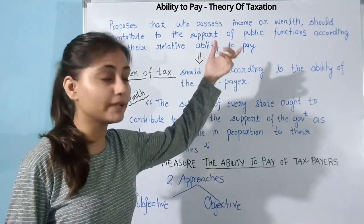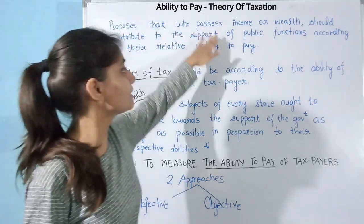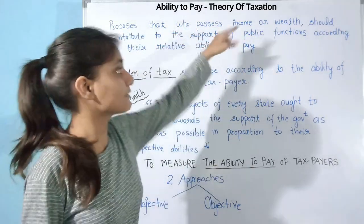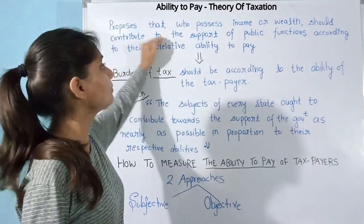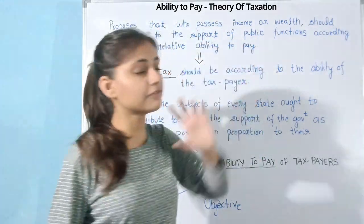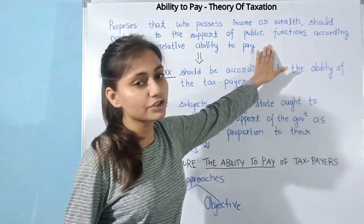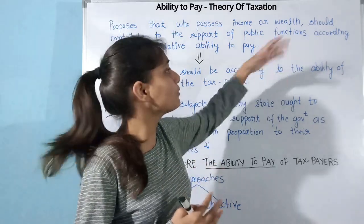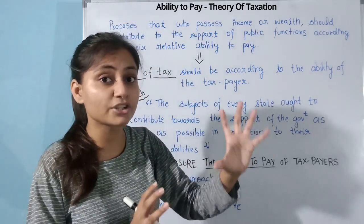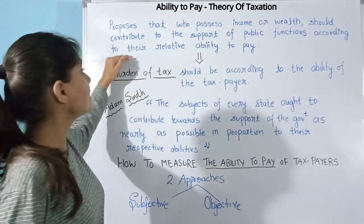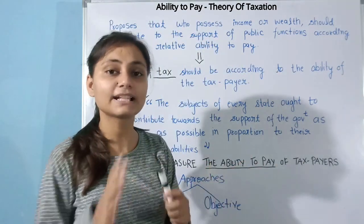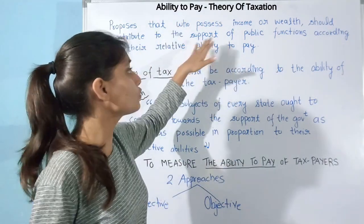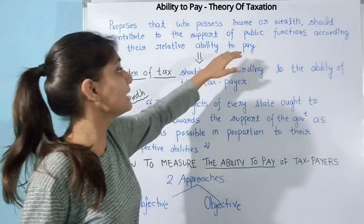The ability to pay theory proposes that those who possess income or wealth should contribute to the support of public functions — that is, everything the government does, like providing security, building roads, and bridges. According to their relative ability to pay, based on how much wealth or income they have, they should contribute accordingly.